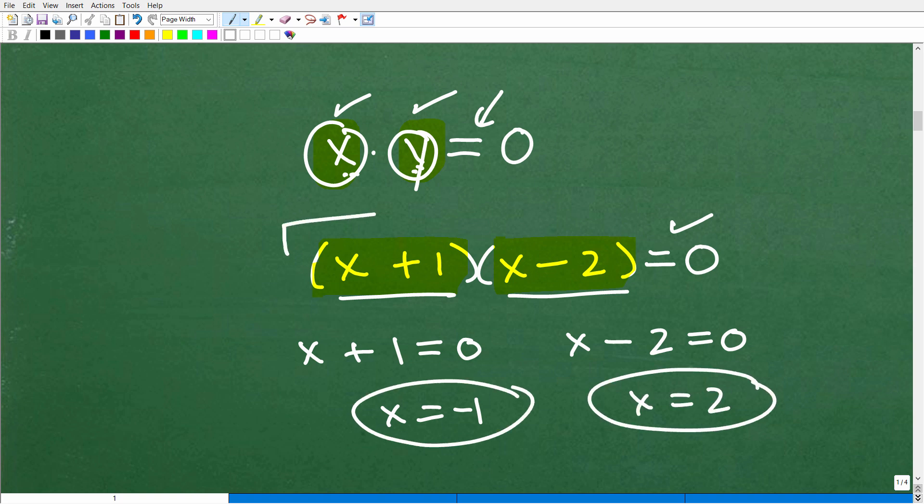Now, this is an illustration of something called the zero product property. So that's why when you can factor, you definitely want to factor, because it's so easy to solve these things.